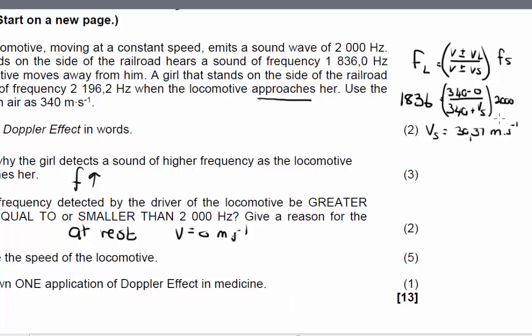Now on this question, you could also have used the sound that's being compressed, the girl that stands on the side of the railroad that's being approached by the locomotive. You once again have to keep Doppler's formula as it is on your formula sheet. But then your values would be a little bit different. It would be 2196.2 as the frequency of the listener is going to be equal to 340 plus 0 above the line and under your line 340 minus Vs.